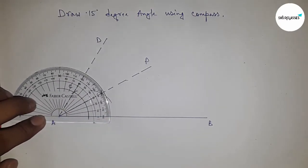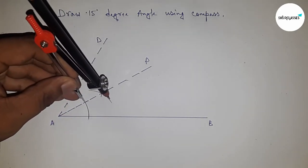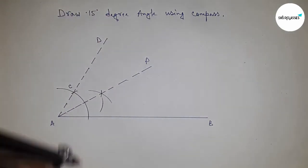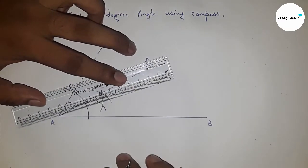Taking any length and drawing arc here with same length and put in the compass here and cut the arc. Next joining this. So this is Q point.